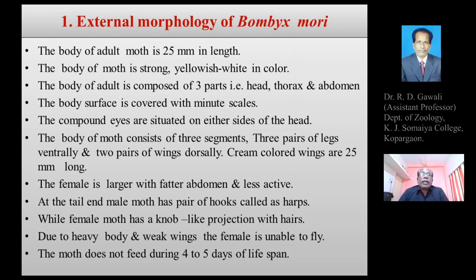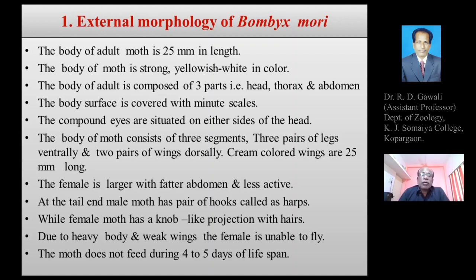The female Bombyx mori is larger with a fatter abdomen and is less active. The male moth has a pair of hooks called harps, while the female has a knob-like projection with hairs representing the ovipositor structure. Due to its heavy body and weak wings, the female is unable to fly and is sluggish in nature. The adult moth does not feed and survives only four to five days after emerging from the cocoon.